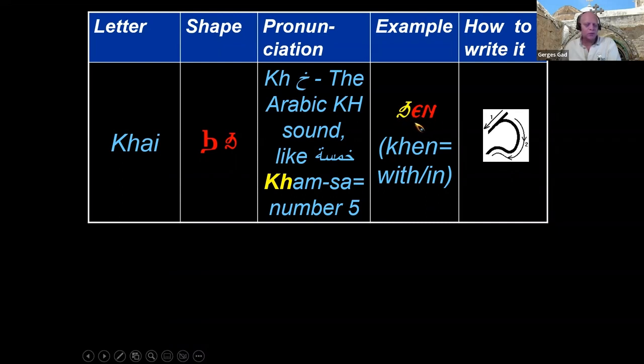So here we have the Chai and then the E and the N. So this is Khein. Like we say, Je Vinyet et Khein Nefioin, in the name of the father. Khein means with or in.